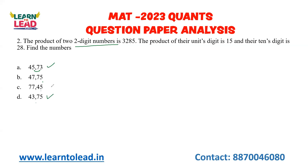And their tens digit product is 28. If I multiply all the tens digits in the options, it is 28. We have to find the numbers whose product is 3285. So if I take 45 into 73, let me verify that.